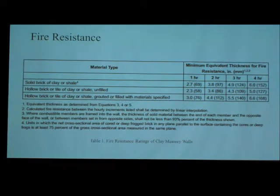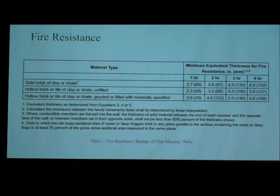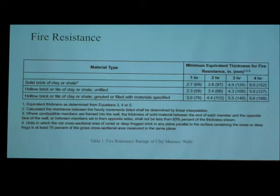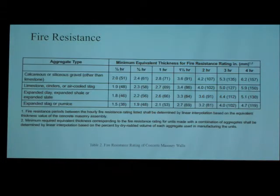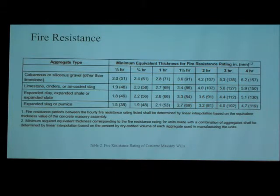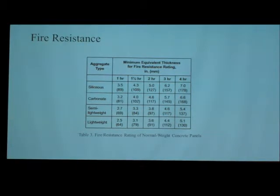This table helps calculate the period of fire resistance. This table is the fire resistance rating of clay masonry walls. The maximum fire resistance period is 4 hours. I will discuss how to use these tables in the example. This table is the fire resistance rating of concrete masonry walls. This is for the fire resistance rating of normal weight concrete panels.